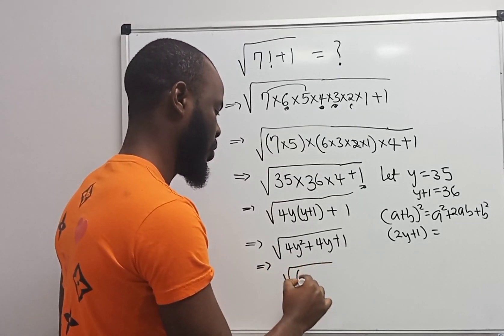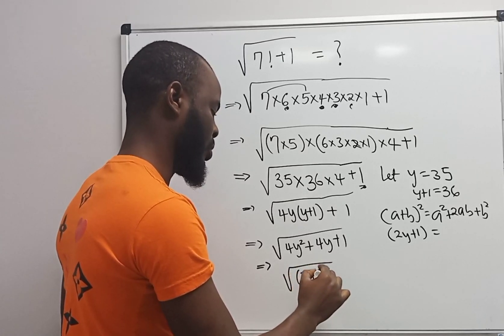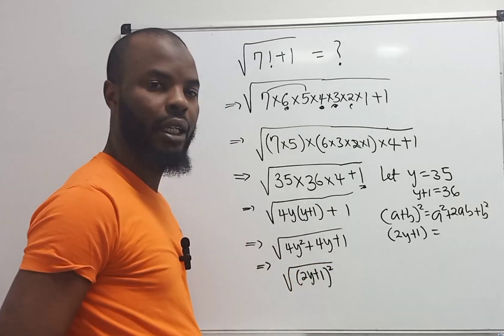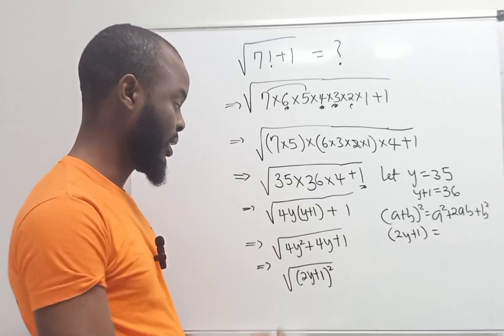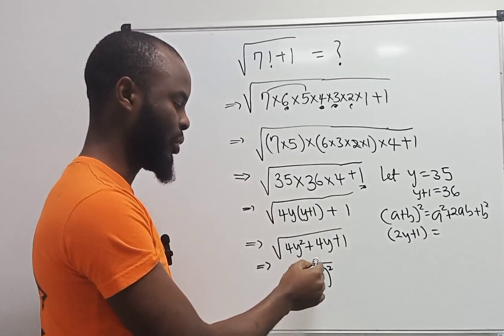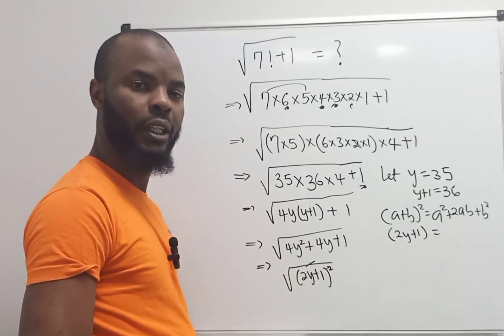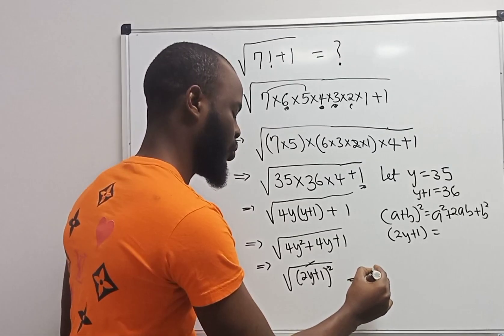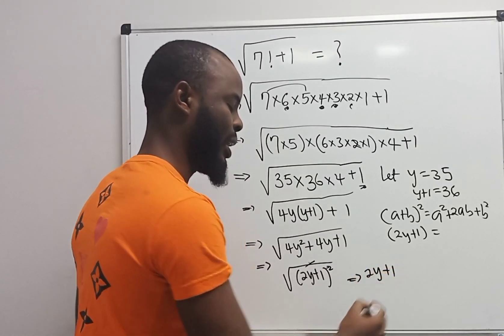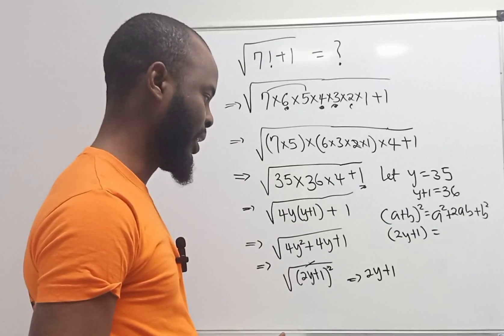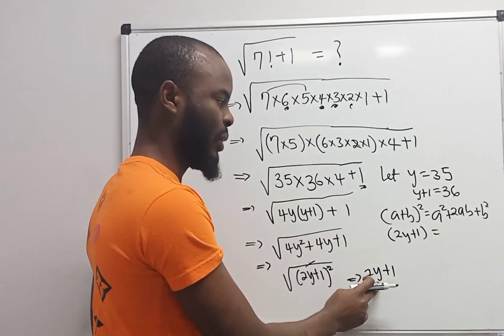Here I'm going to have (2y plus 1) squared. Don't forget the rule of indices. When you have squared and you have square root, it's going to cancel out. So here I have 2y plus 1. Very easy. Now what's y?